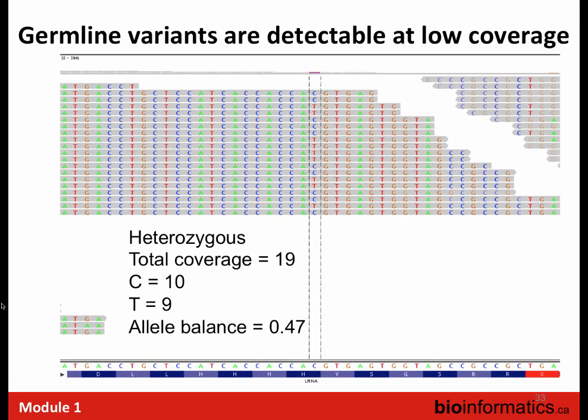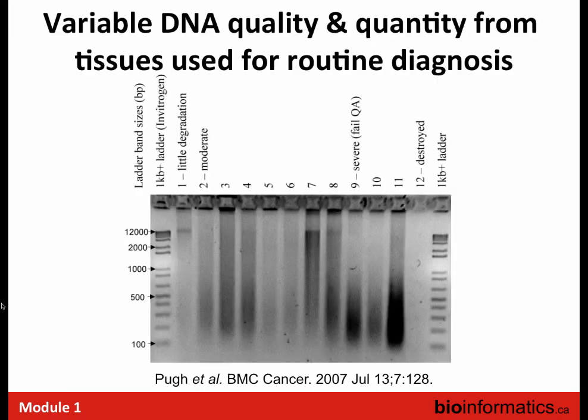Finding these mutations in high quality DNA is relatively straightforward, but applying it to tumor biopsies is confounded by several features. The first challenge is variable DNA quality and quantity from tissues routinely used for diagnosis. These are 12 tissues all from the same hospital, all from the same cancer type — lung tumors — but you can really see quite a bit of variability in the size and quality of the DNA fragments. The ideal case is nice high molecular weight DNA, very easy to work with. But as you go from left to right this DNA gets increasingly degraded until sample 12 on the far right — a metastasis to bone that was decalcified — has the DNA completely destroyed, with absolutely nothing there to analyze.